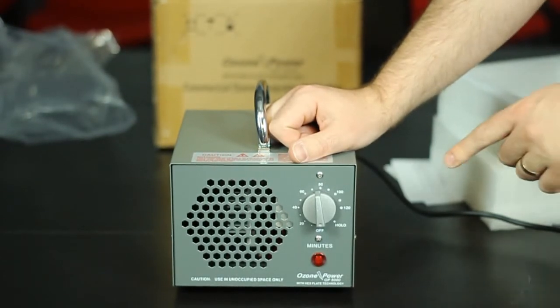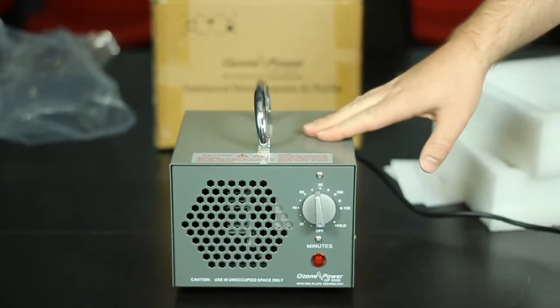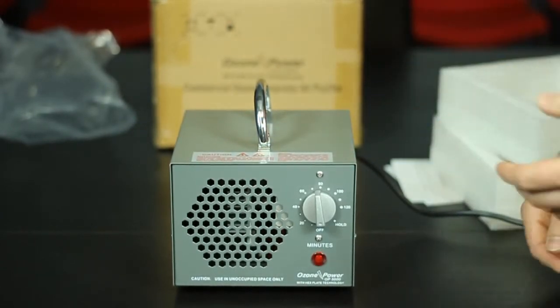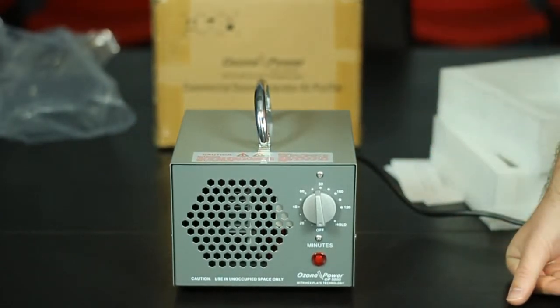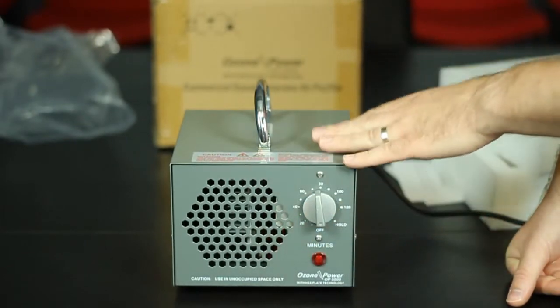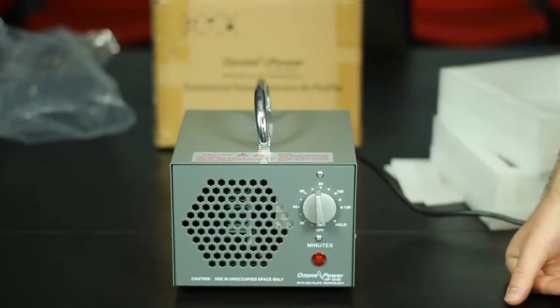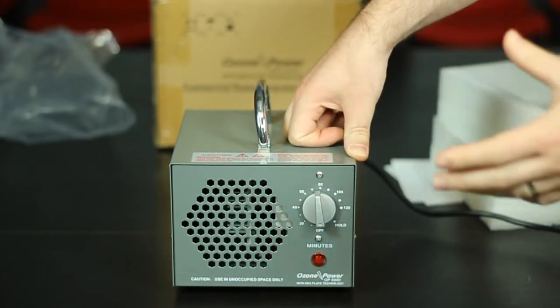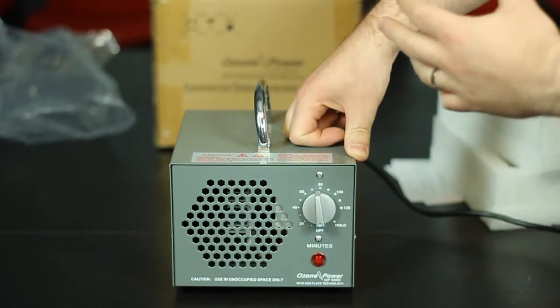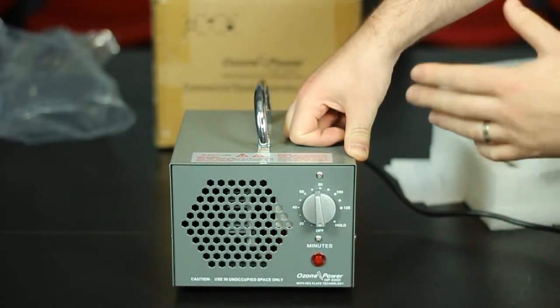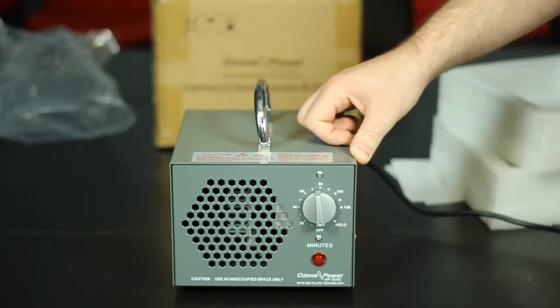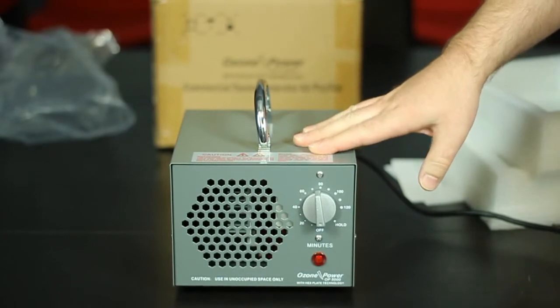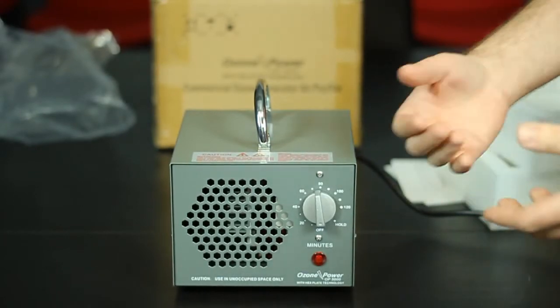If the odor is still there, it may need another cycle. It's more effective to run the unit in cycles because that lets the ozone generator have fresh oxygen to produce ozone. The unit breaks down oxygen molecules and converts them into ozone. Without fresh oxygen, the unit can't produce fresh ozone. So when treating a space, it's always best to run the unit in cycles versus long periods at a time.